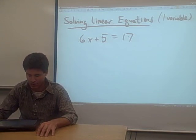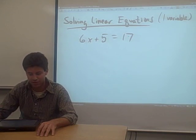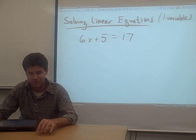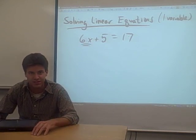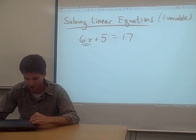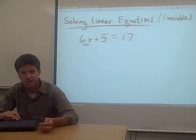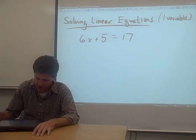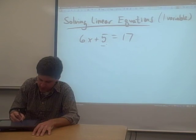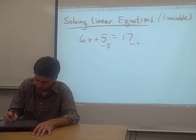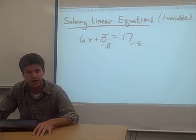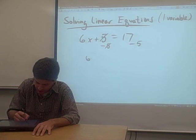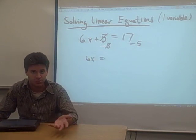So to solve this equation, what we need to do is get everything with an x in it, every term that has an x in it, on one side of the equation, and everything else on the other side of the equation. So in this case, there's only one term with an x in it, it's 6x. So we need to get that on one side of the equation by itself and get everything else on the other side of the equation. So in order to do that, what we do is subtract 5 from both sides of the equation. Subtracting 5 from both sides of the equation cancels this 5 with that negative 5, and you end up with 6x all by itself on the left-hand side of the equation, which is what we want.